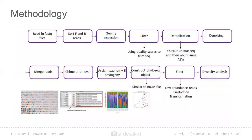The methodology used is the DADA2 pipeline, which is specifically designed to correct Illumina-sequenced amplicon errors and infer sequences exactly. It also resolves differences of as little as one nucleotide. One key difference between DADA2 and other pipelines is that it performs denoising before merging reads. This denoising prior to merging reduces the rate of inaccuracy and makes DADA2 unique among other pipelines.